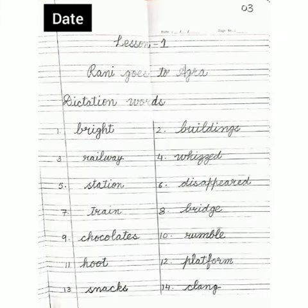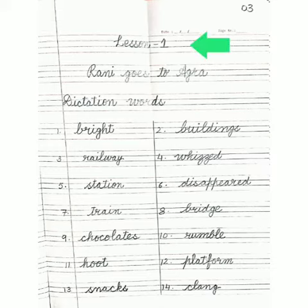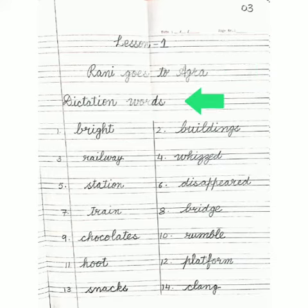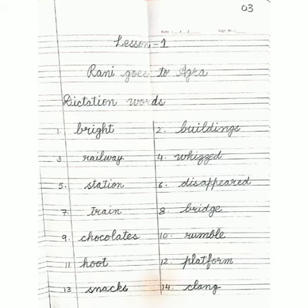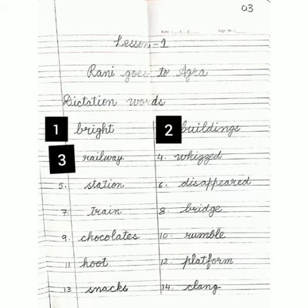In the first line, write Lesson 1. In the second line, Rani goes to Agra. In the third line, write Dictation Words. Now draw a line in between and put the numbers 1, 2, 3, 4 accordingly.